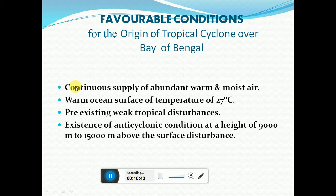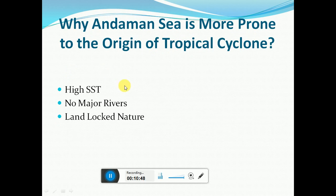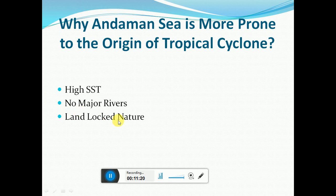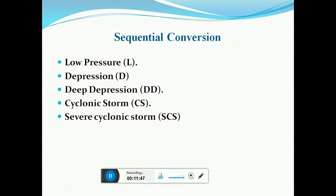It is actually the Andaman Sea, not the entire Bay of Bengal, which is most prone to tropical cyclone origin, due to three factors. First, high sea surface temperature — often exceeding 30°C to 32°C. Second, no major river joins the Andaman Sea, keeping salinity and SST stable. Third, the landlocked nature of the Andaman Sea creates a greater difference between land and sea surface temperatures, which is ideal for tropical cyclogenesis.